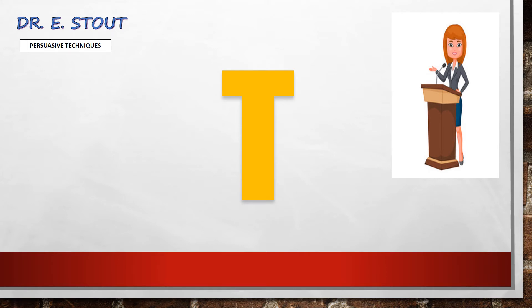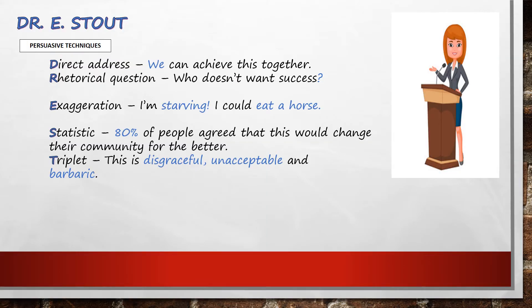Our next letter is T. The T stands for triplet. Think of triplets — it's three. And that's all this technique means: using three words, three phrases, or three points to really back up what you're saying. Doing this makes it sound much more convincing. The example here is: 'This is disgraceful, unacceptable and barbaric.' Using your topic, pause the video and see if you can write your own triplet.